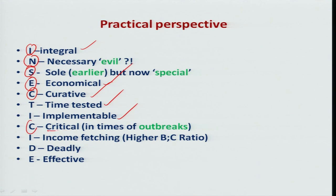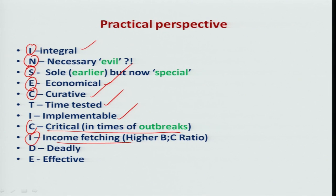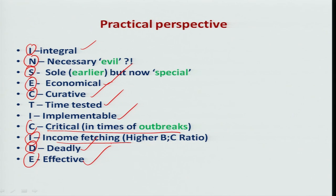C refers to critical — at times of outbreak of insects on a particular crop, there is no other technique to overcome the problem, so insecticides come to the farmer's rescue. I refers to income-fetching — it should have a higher cost-benefit ratio. D should be deadly to the target species but safe to the natural enemies. And lastly, E — it should be very effective. So considering each word with its own meaning, insecticides become a major component in the IPM. Thank you.